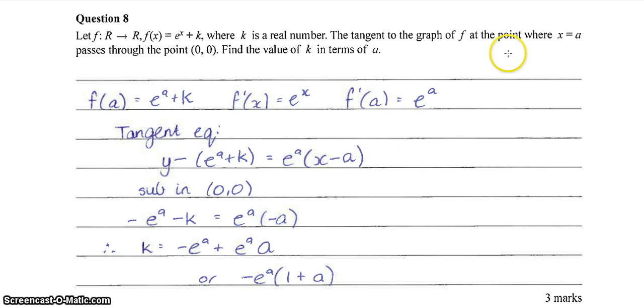The extra information we were told was that that tangent that we just found the equation of passes through the point 0, 0. So we can actually sub in 0, 0 into here, because we know that this line goes through 0, 0. So if we do that, we end up with negative e to the a minus k equals e to the a times negative a. And then we can simply rearrange and solve for k, which gives us this. And if we want to factorize that, we can.